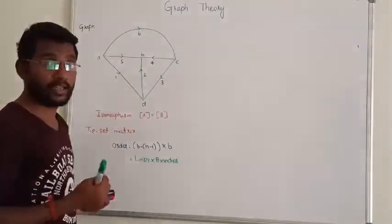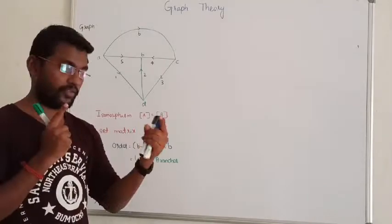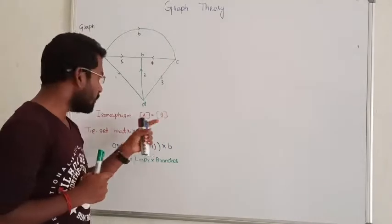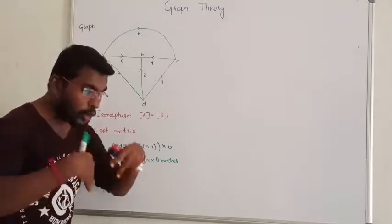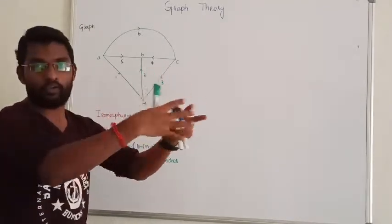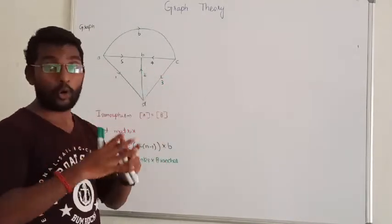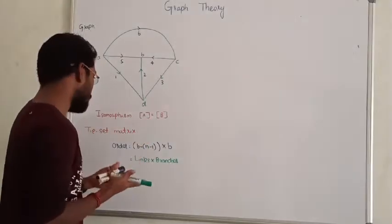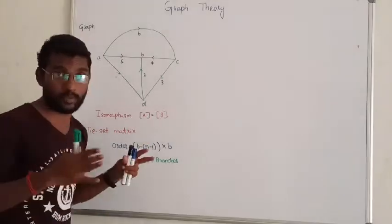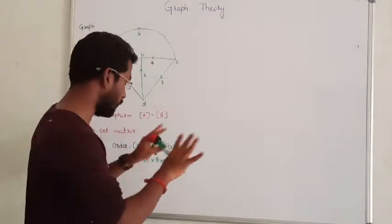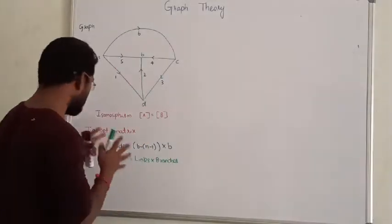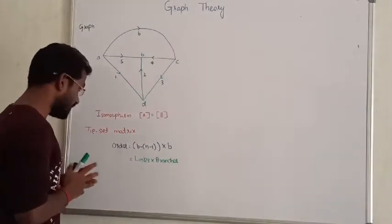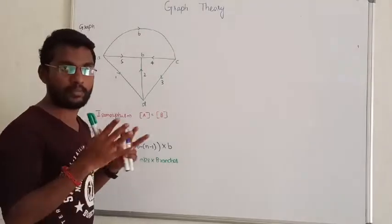So A is the incident matrix of a graph. B is the incident matrix of another graph. If the two incident matrices are equal, that is isomorphism. Next we are going to discuss about the tie set matrix.